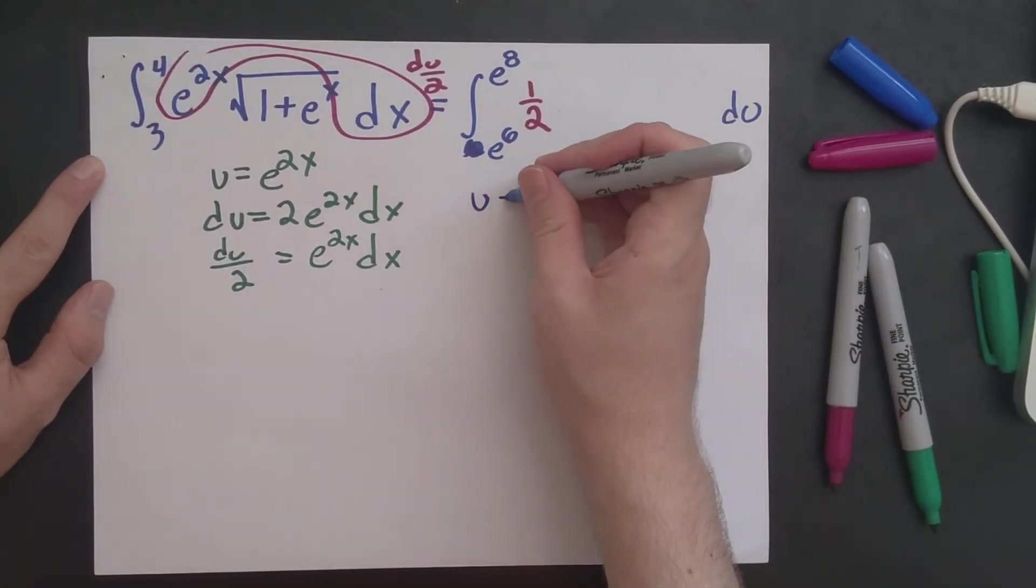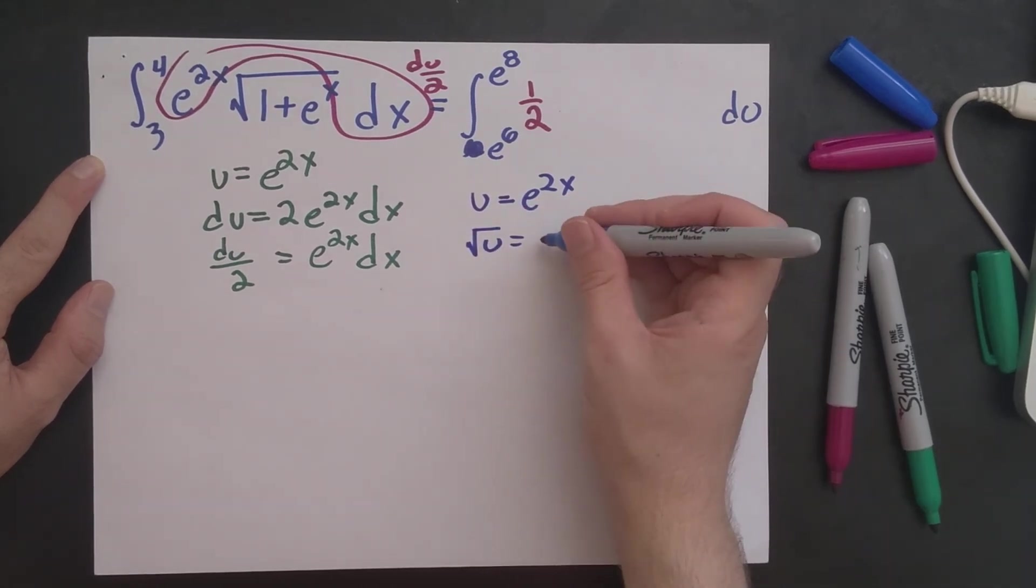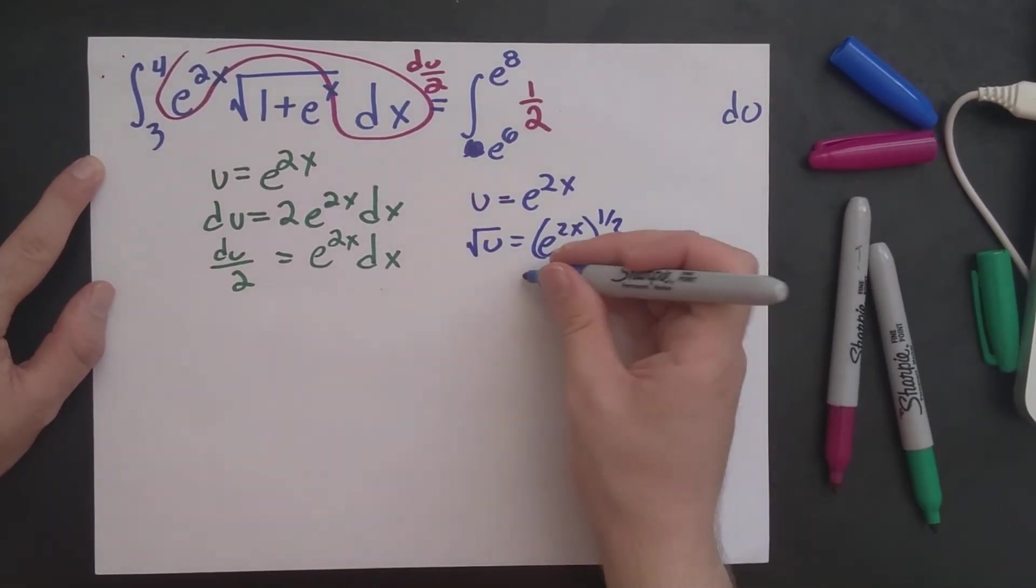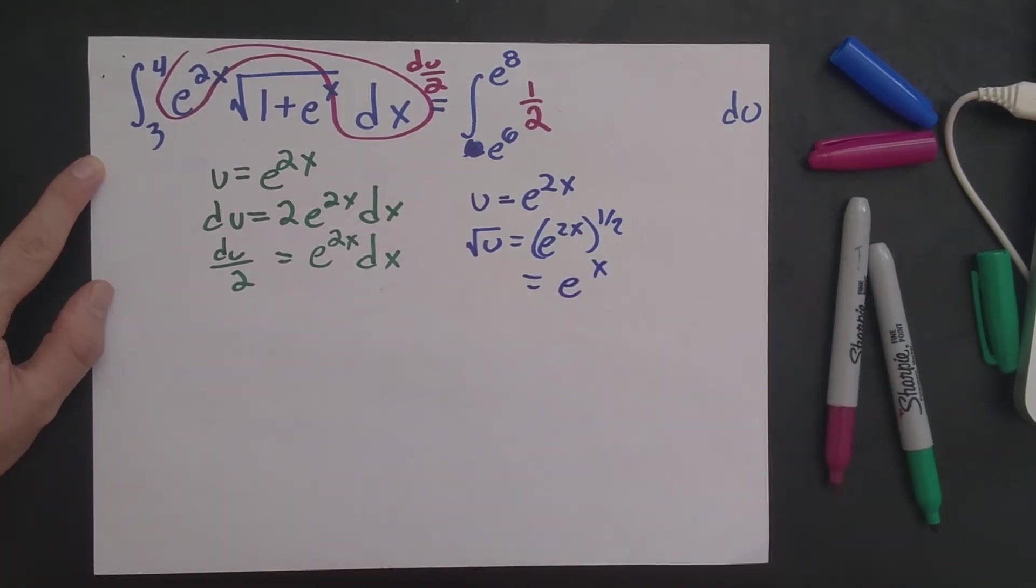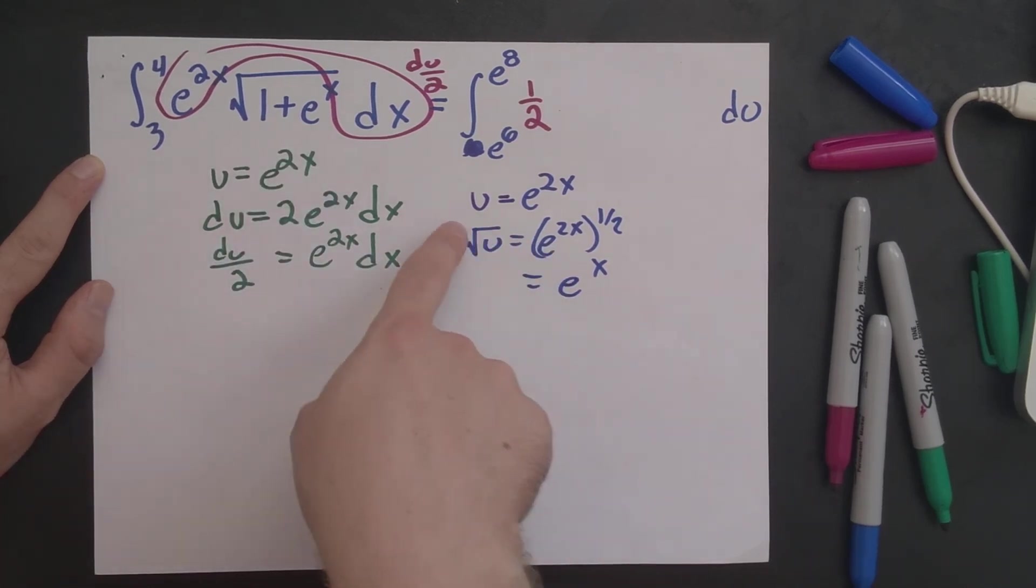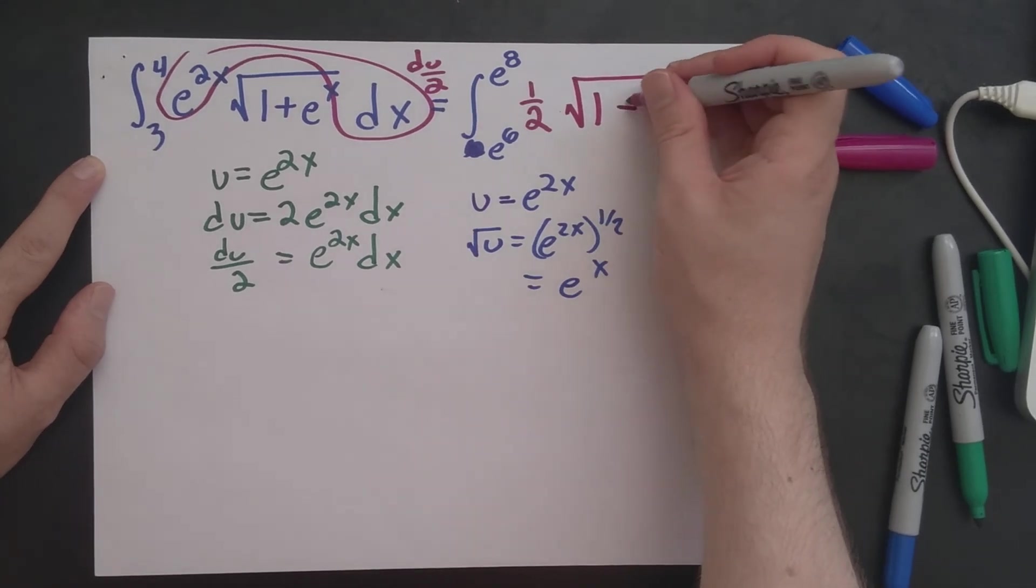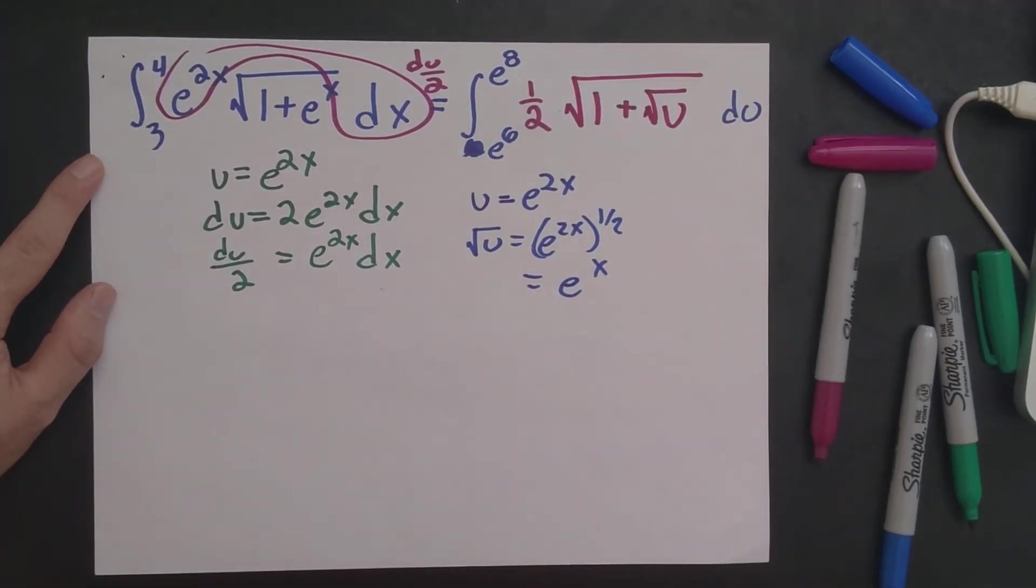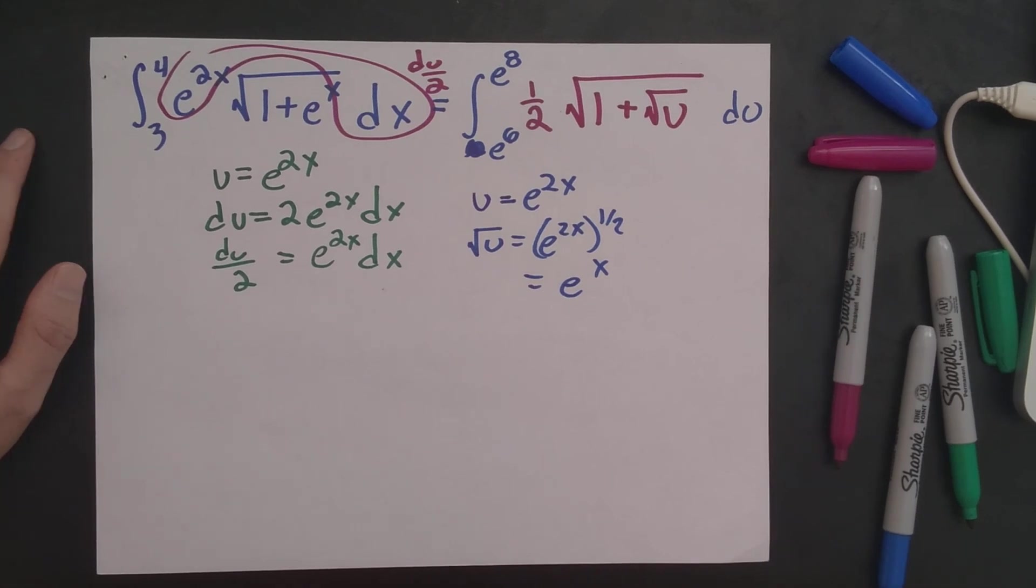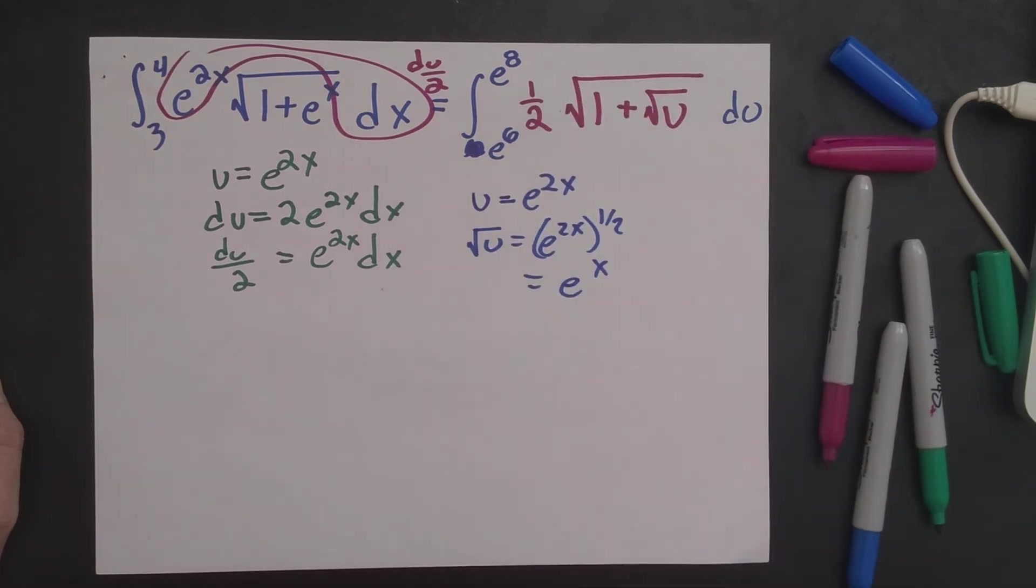And u is e to the 2x. And so the square root of u is e to the 2x to the 1 half power. And that's just e to the x. So what we see here, e to the x can be replaced with square root u. So square root of 1 plus e to the x becomes square root of 1 plus square root u. So again, this might not seem like a helpful substitution. But we were told this is what the student is trying. What is the correct integrand at this point? So the student is attempting this substitution. This right here is a true statement.